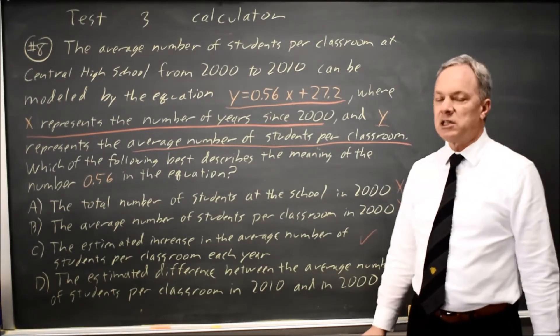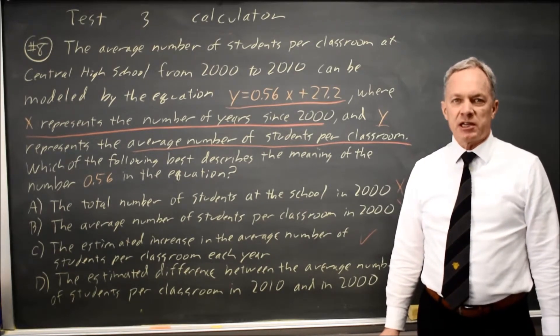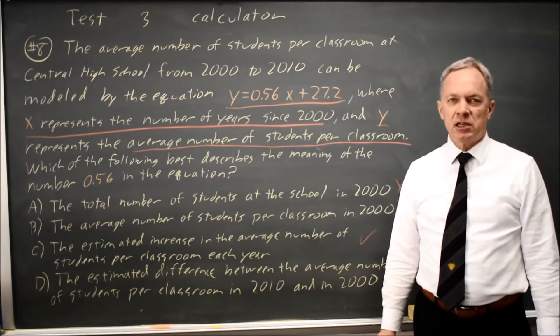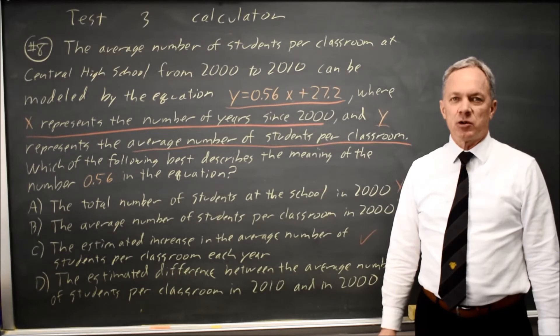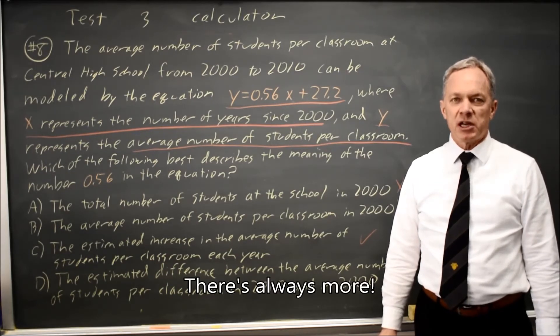The correct answer is C. College Board will typically ask two of these questions on each SAT, so make sure you've practiced interpreting a linear equation in context, and come back soon for my next math video. With math, there's always more.